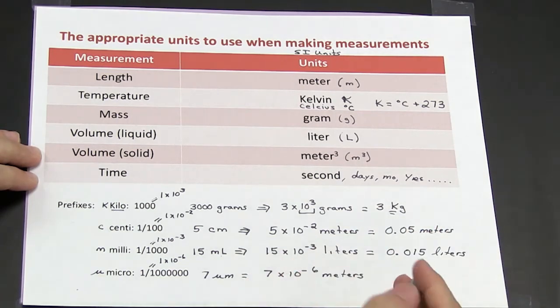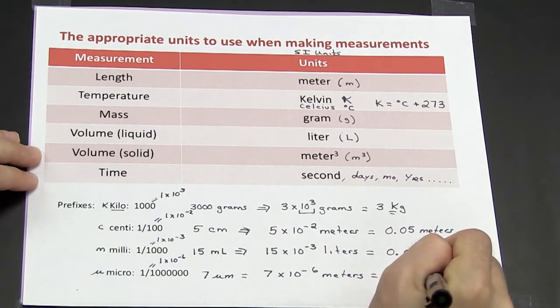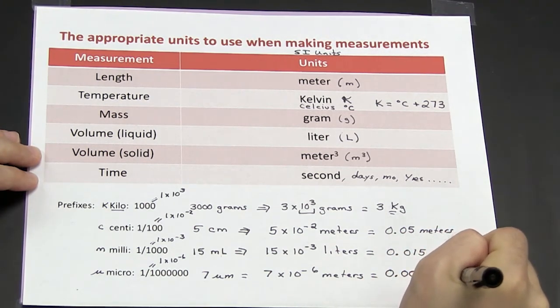And 7 times 10 to the minus 6 meters is the same thing as 0.000007 meters.